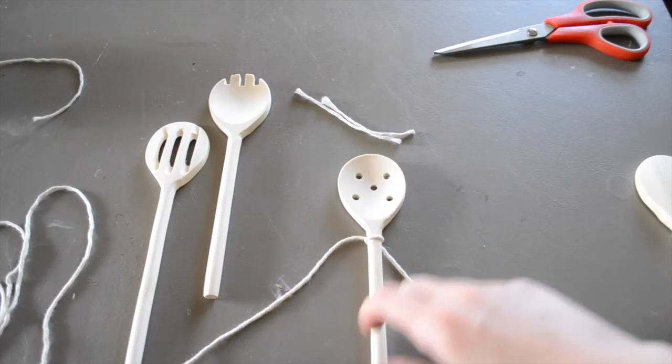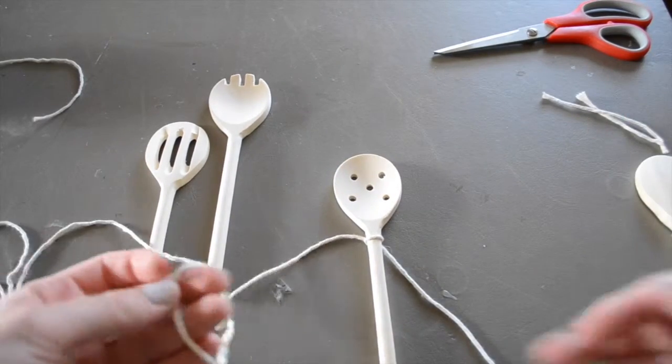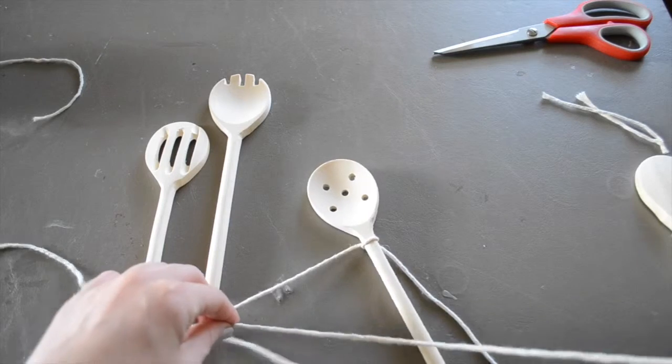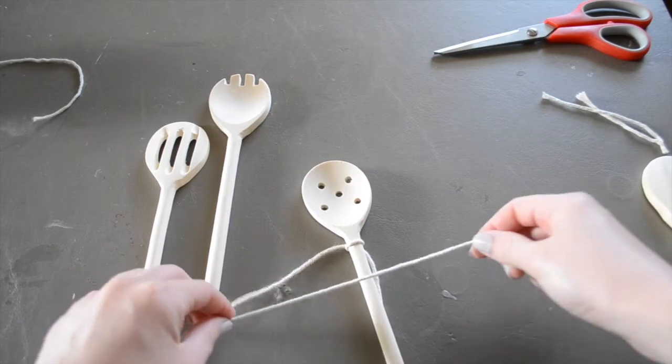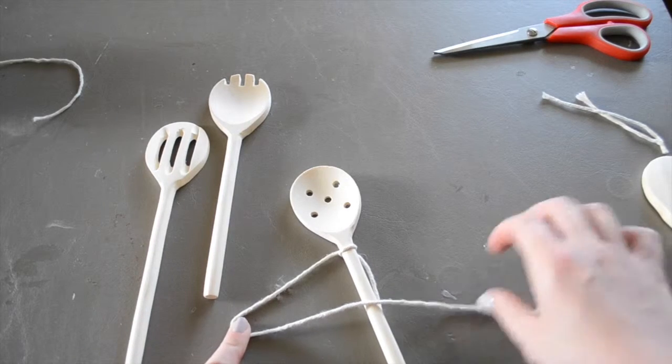The first step is you want to take the left side and make a number four, crossing it over the top of your wooden handle.